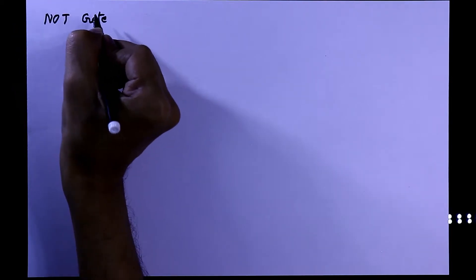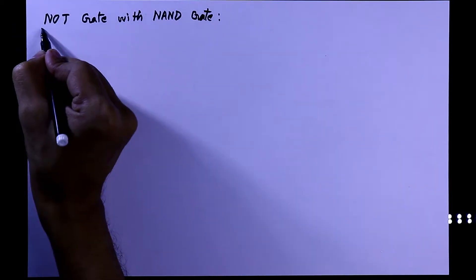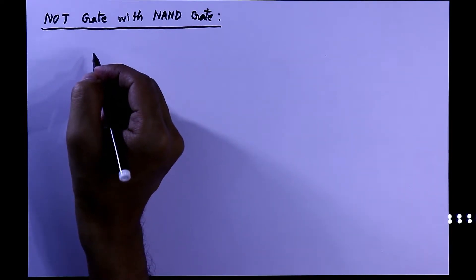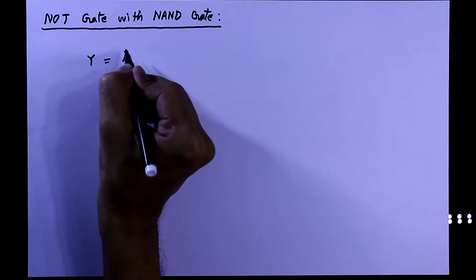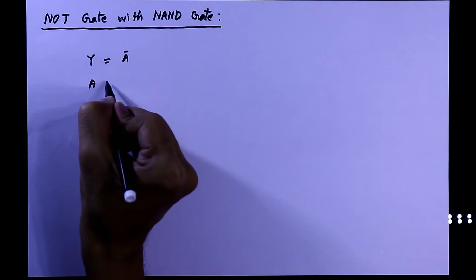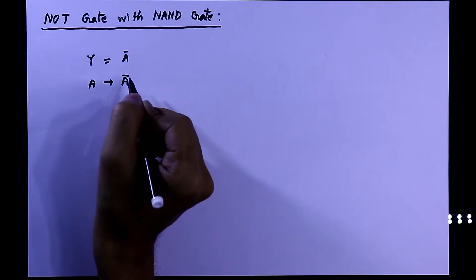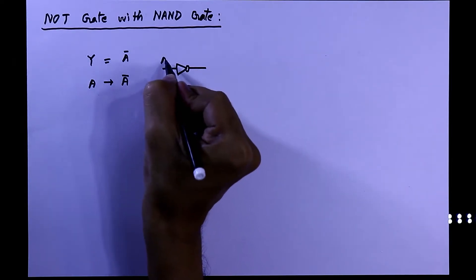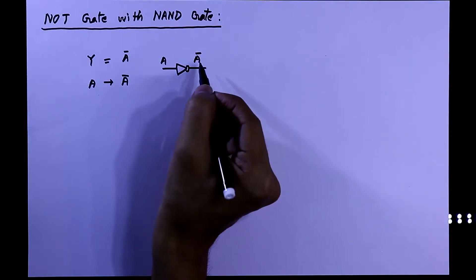In this video we are going to see how to make a NOT gate using a NAND gate. First we will see the mathematical expression of NOT gate. It is y equal to a bar. If input is a, then we will get a bar as an output. This is the symbol of NOT gate. The output we can say as y.